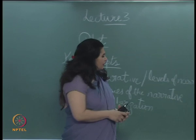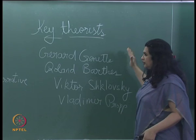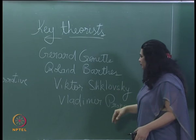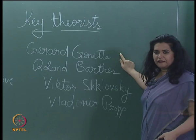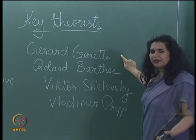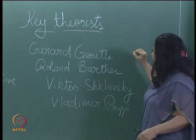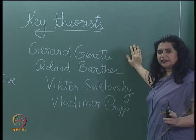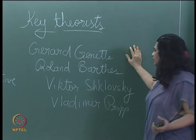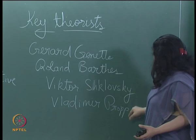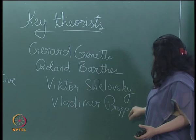These are the key theorists we should be looking at, but this is not an exhaustive list. We will be dealing with more theorists as we go deeper into the course. One is Gerard Genette, a French theorist who is a formidable influence on narrative. All these theories basically focus on literary theories, but we are going to see how literary theories can be applied to cinematic theories as well. Roland Barthes, Victor Shklovsky, and Vladimir Propp - these are the theorists we will be looking at in detail today.